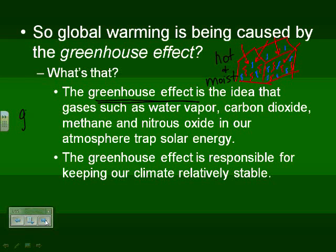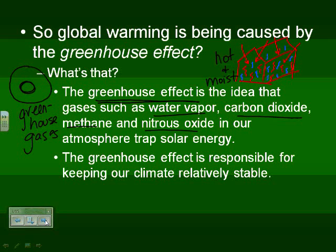Things called greenhouse gases — water vapor, carbon dioxide, methane, nitrous oxide — they're getting trapped in our atmosphere. And instead of it being a greenhouse, what we're really looking at is that we have the earth and then we have our atmosphere, and everything's being trapped around us.